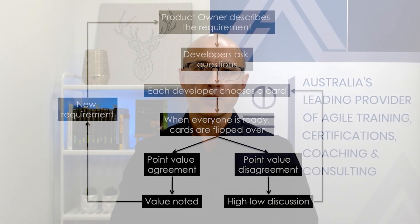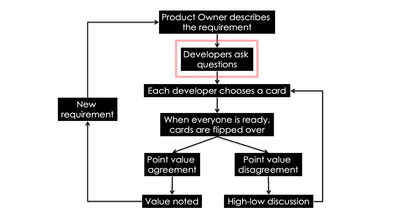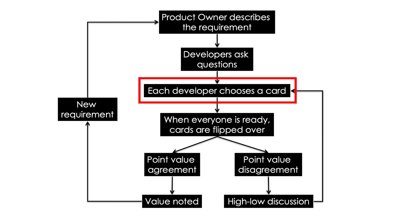This is the planning poker process and it begins with the product owner describing the top priority product backlog item that needs to be estimated. The developers may ask clarifying questions or have a high-level discussion with one another around implementation — getting enough information so they can vote on what the story points might be. Each developer holds their planning poker cards, which can be physical cards or an app on their phone.